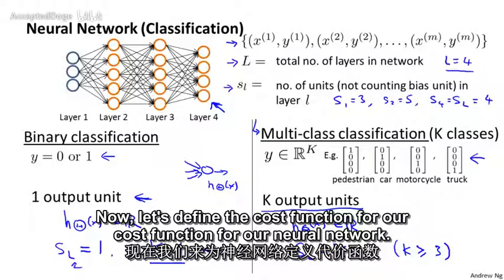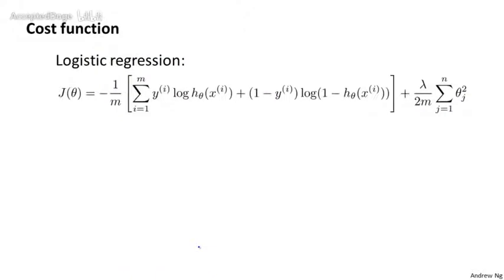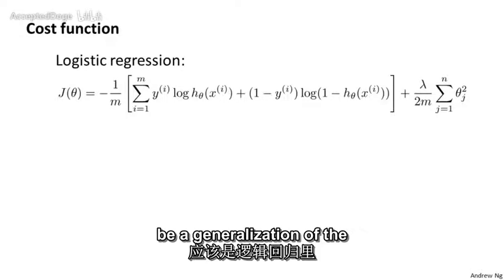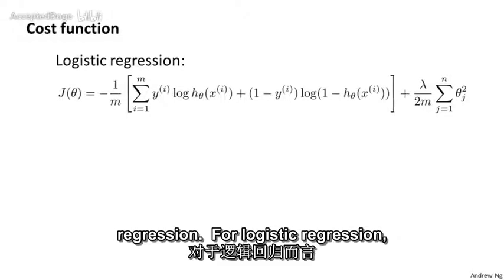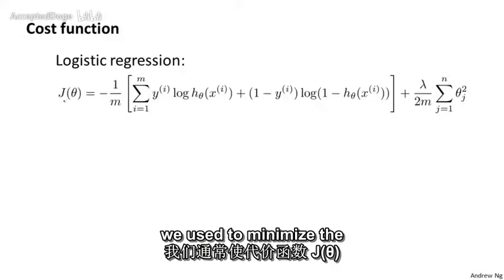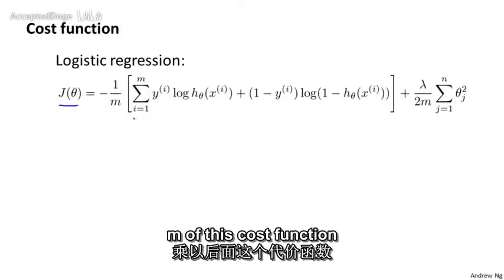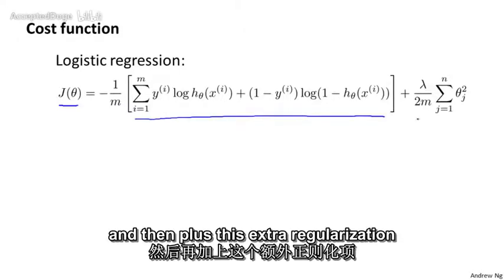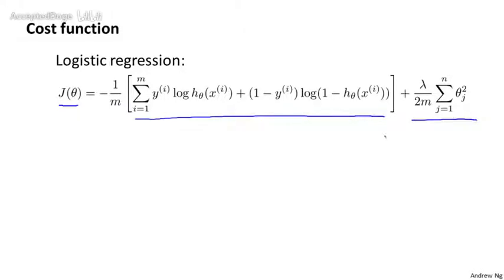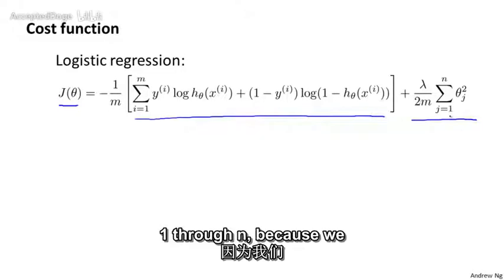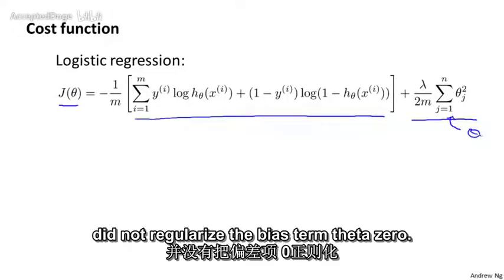Now let's define the cost function for our neural network. The cost function we use for the neural network is going to be a generalization of the one that we use for logistic regression. For logistic regression, we used to minimize the cost function J(θ) that was minus 1 over m of this cost function and then plus this extra regularization term here, where this was a sum from j equals 1 through n because we did not regularize the bias term θ_0.